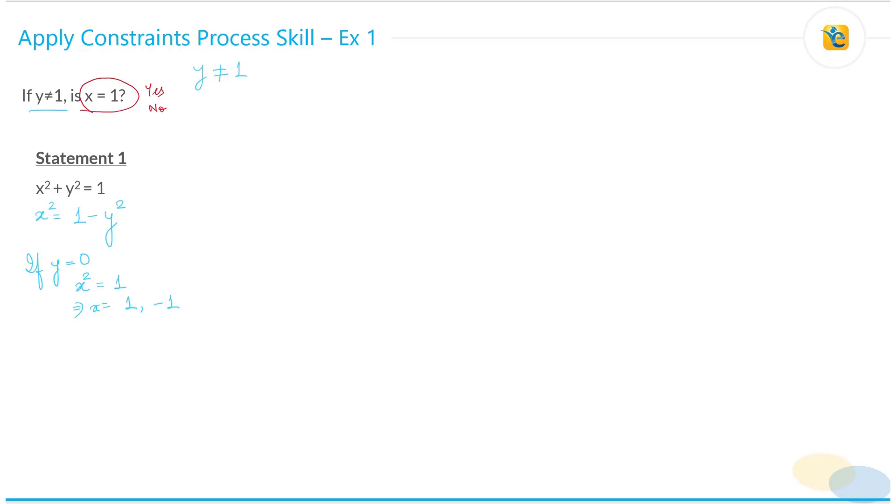So again you still have two values of x. x could be 1 or x could be minus 1. But if y is not equal to 0 then again x could be anything, x will not be 1. So again we can't say for sure, we can't say with surety that x is equal to 1. This means that this statement is not sufficient.